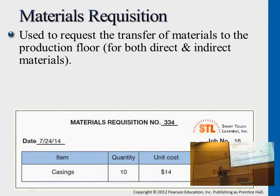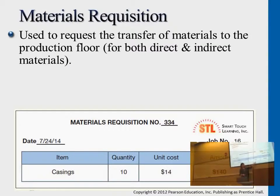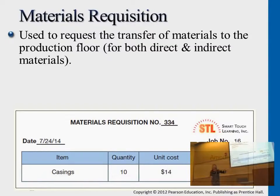Usually nowadays it's online. Basically, this captures the materials, what category the material is, the quantity of the materials, and the cost of the materials all together. This is specifically for job order number 16 — what materials are used for this order?